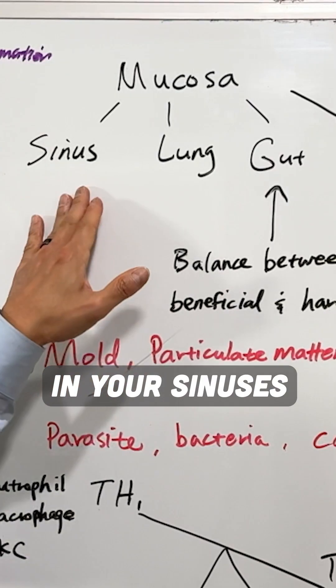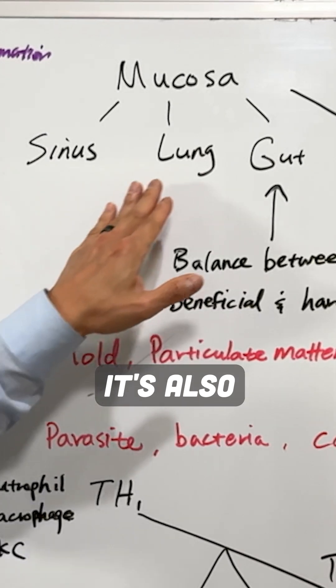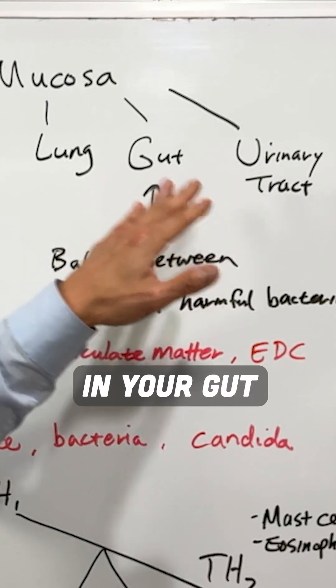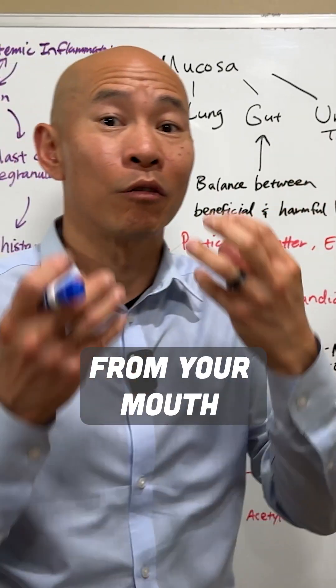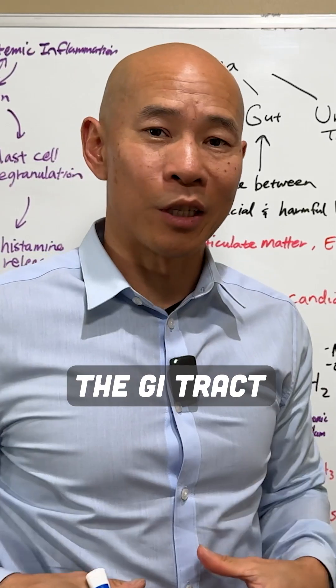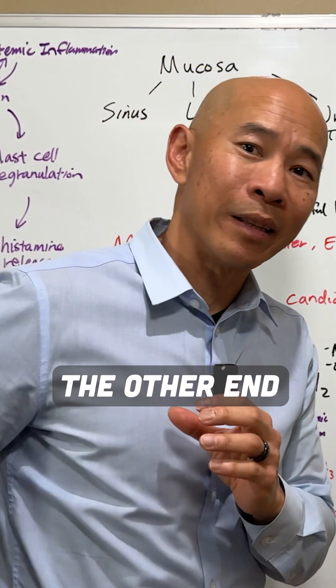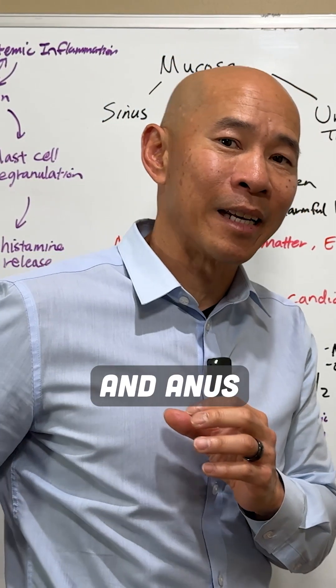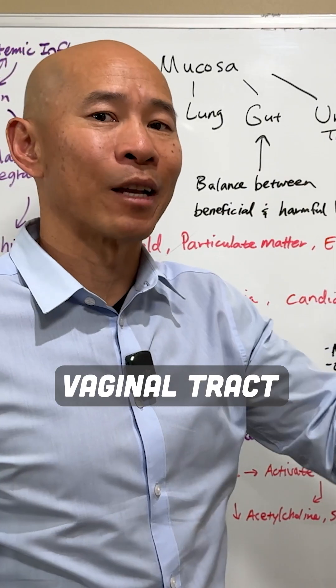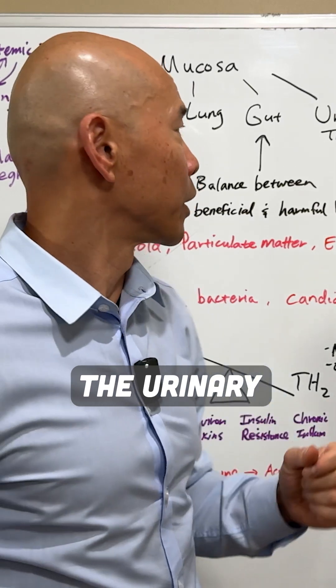It's also in your sinuses. It's also in your lungs. It's also in your gut, which is from your mouth — that tube that goes through the GI tract all the way to the other end, the anus — and in the urinary tract, like the vaginal tract and the urinary tract.